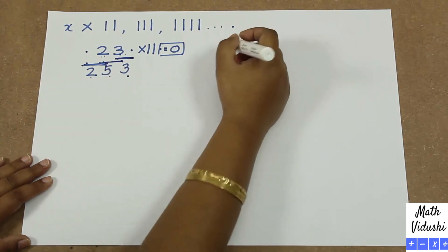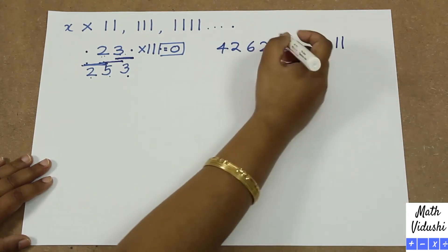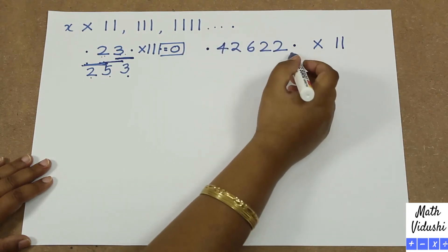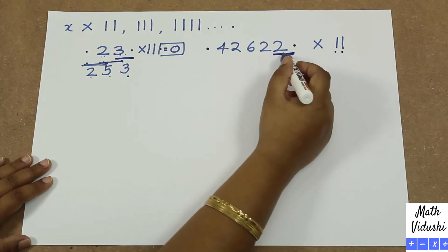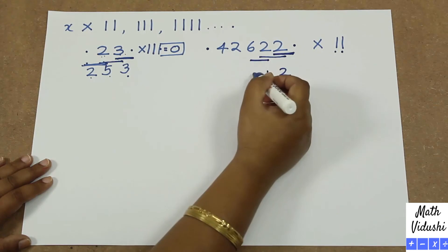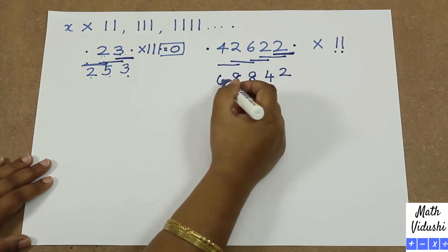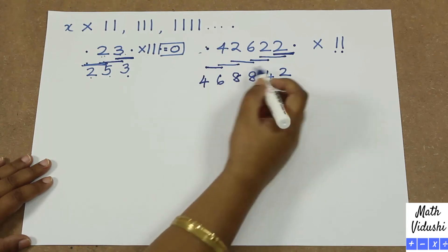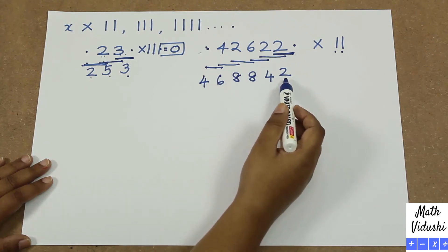Let's look at 42622 multiplied by 11. You start by putting one dot at the end of the number and one dot at the beginning, then take two numbers at a time and add them. So you get: 2+0=2, then 2+2=4, then 2+6=8, then 6+2=8, then 2+4=6, and finally 4+0=4. So 42622 multiplied by 11 gives you 468842.